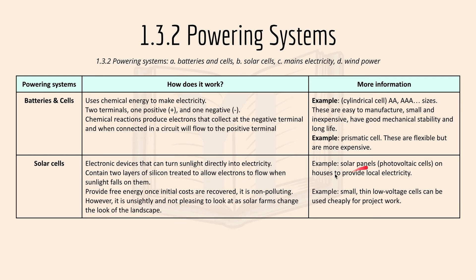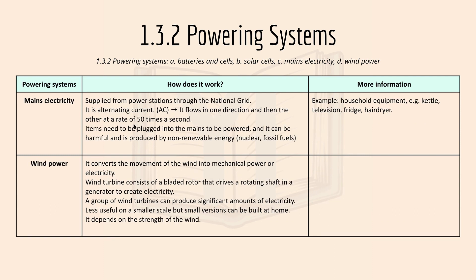Examples of solar cells include solar panels; small thin low-voltage cells can also be used cheaply for project work. Mains electricity is supplied from a power station through the national grid. It has an alternating current that flows in one direction then the other at a rate of 50 times a second. Devices need to be plugged into the mains to be powered. Wind power converts the movement of wind into mechanical power or electricity. A wind turbine consists of a bladed rotor that drives a rotating shaft in the generator to create electricity.